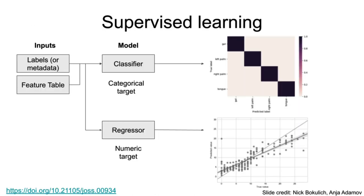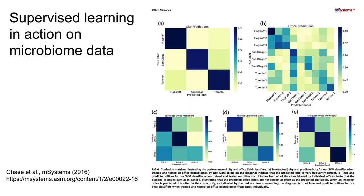Supervised learning takes a feature table and labels or metadata as input and can be used for either categorical or numeric data. With categorical data you might be classifying body site from microbiome samples — for example, gut, left palm, right palm, tongue. With a regressor you have a numeric target — for example, predicting an individual's age from microbiome composition.